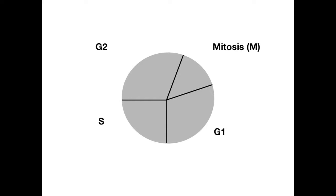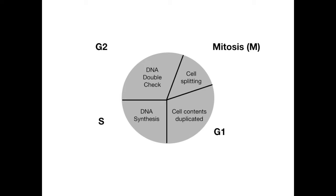In the cell cycle you have mitosis, which we'll call the M phase, and then the G1 phase, the S phase, and the G2 phase. In each phase something is happening: in mitosis, you ultimately get the splitting of the cell into two. In G1, the cell contents get duplicated. In S phase, DNA is actually synthesized. In G2, it's a maintenance phase where the DNA gets double-checked to make sure there are no errors.